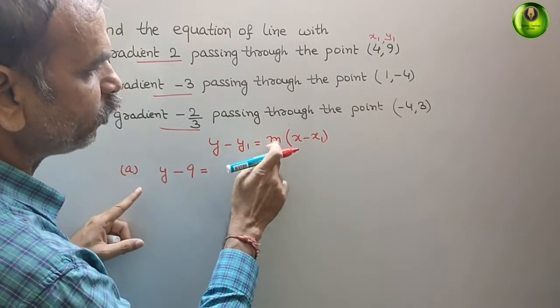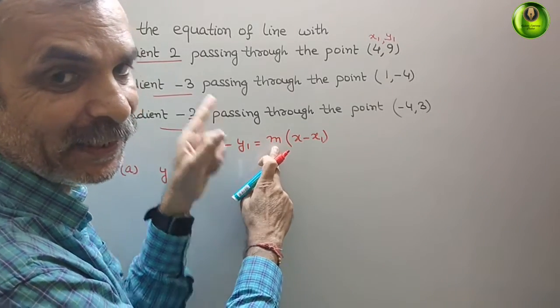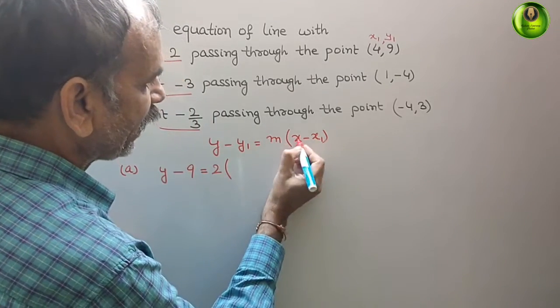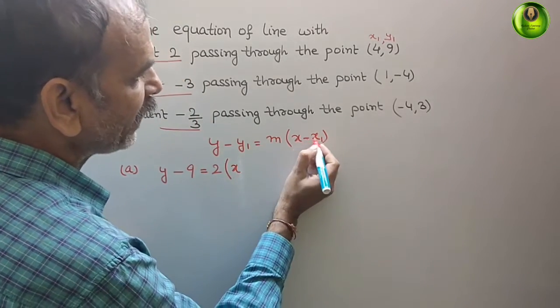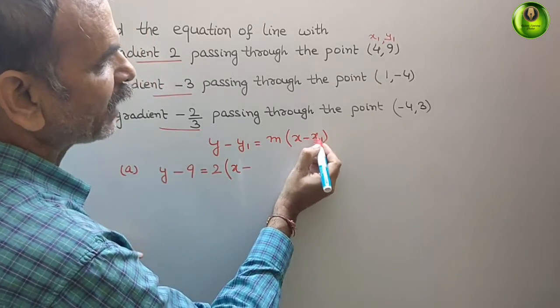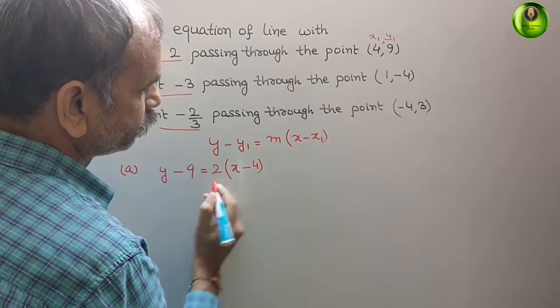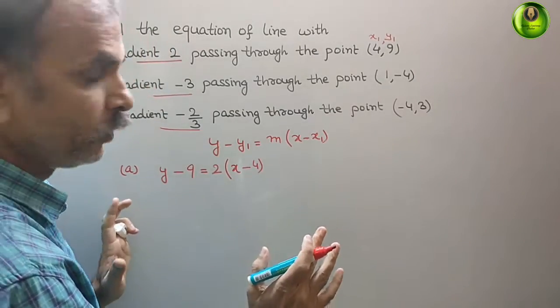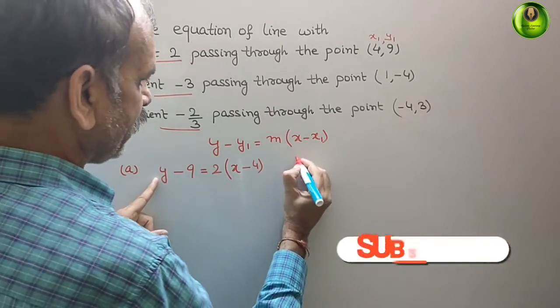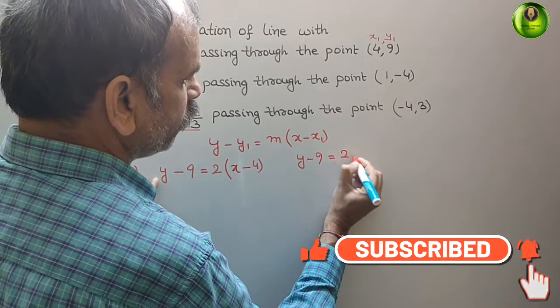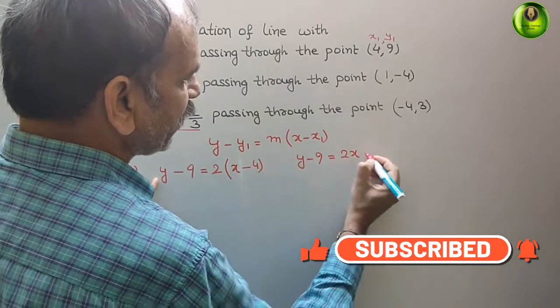That is equal to m. M is the gradient, that is your 2. And x minus x1, x1 is 4. Now solve this. If you solve this, what you will get? Then, y minus 9 is equal to 2x minus 8.